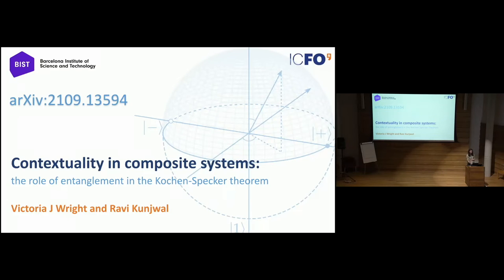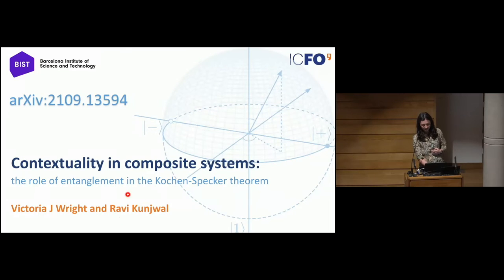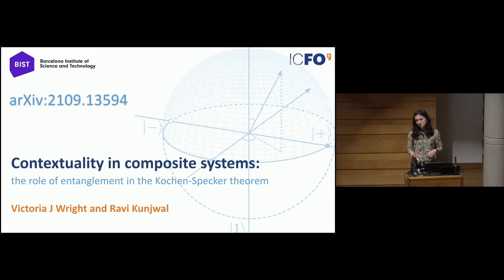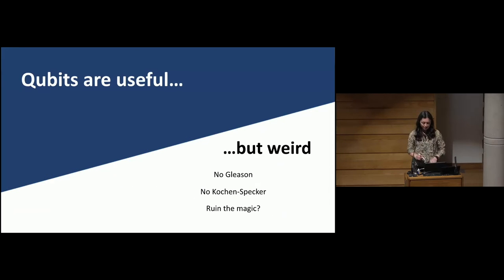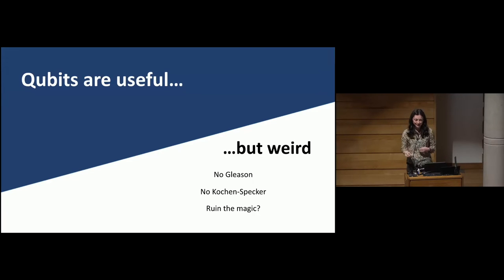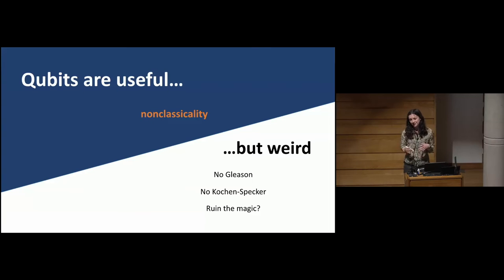I want to talk about a project that I did with Ravi, who's now at the University of Brussels. It's about contextuality in composite systems, specifically mostly multi-qubit systems. As a premise, qubits are useful — quite a lot of you use them in various applications, maybe quantum computation or quantum information. And generally what you're taking advantage of is the non-classicality of them in whatever sense you understand.